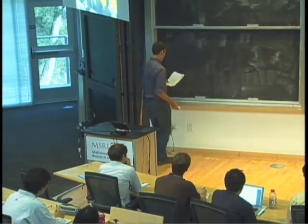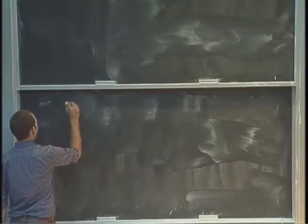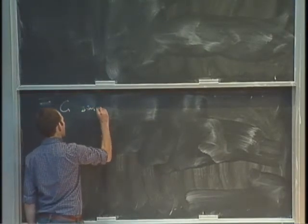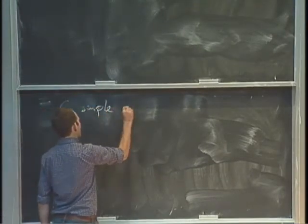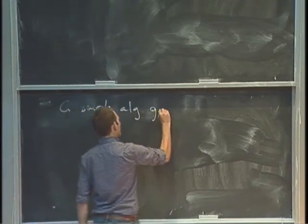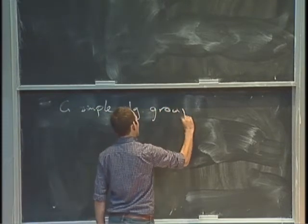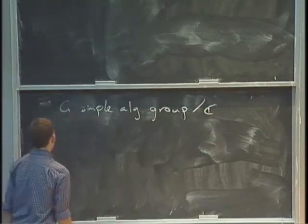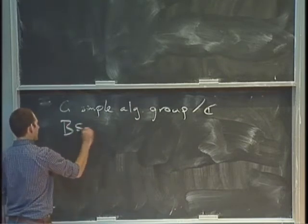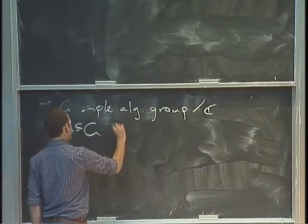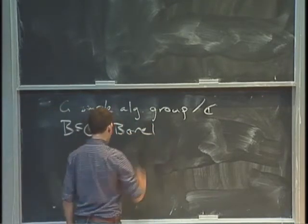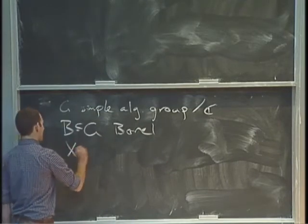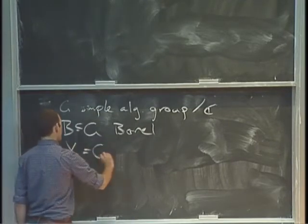Let me set up some notation. I want to fix G, a simple algebraic group. I'll always work over C. B is going to be a Borel subgroup. And X is going to be the flag manifold, G mod B.